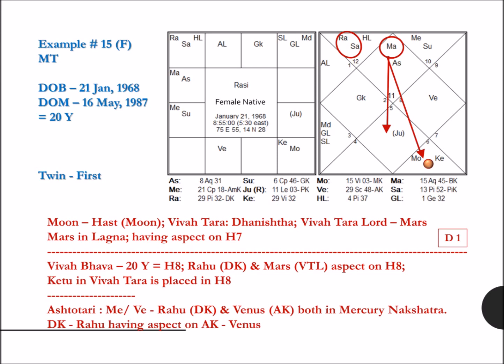Now we are coming to the charts of twins, born with a time difference of 15 minutes. Planetary positions in the Rashi charts remain the same in both charts. So yoga for marriage or no marriage remains the same, applicable on D1.